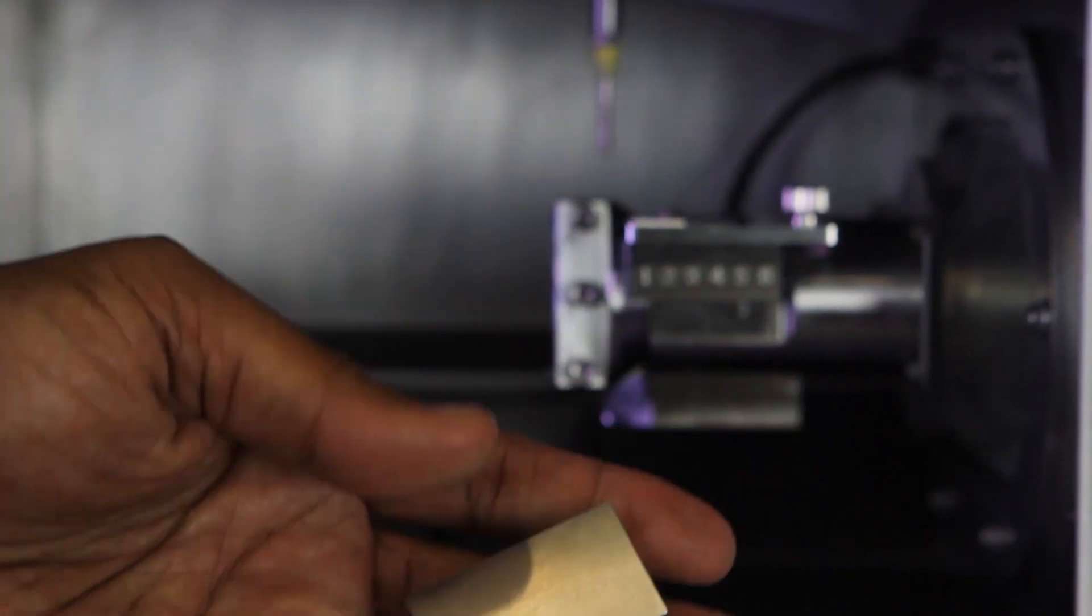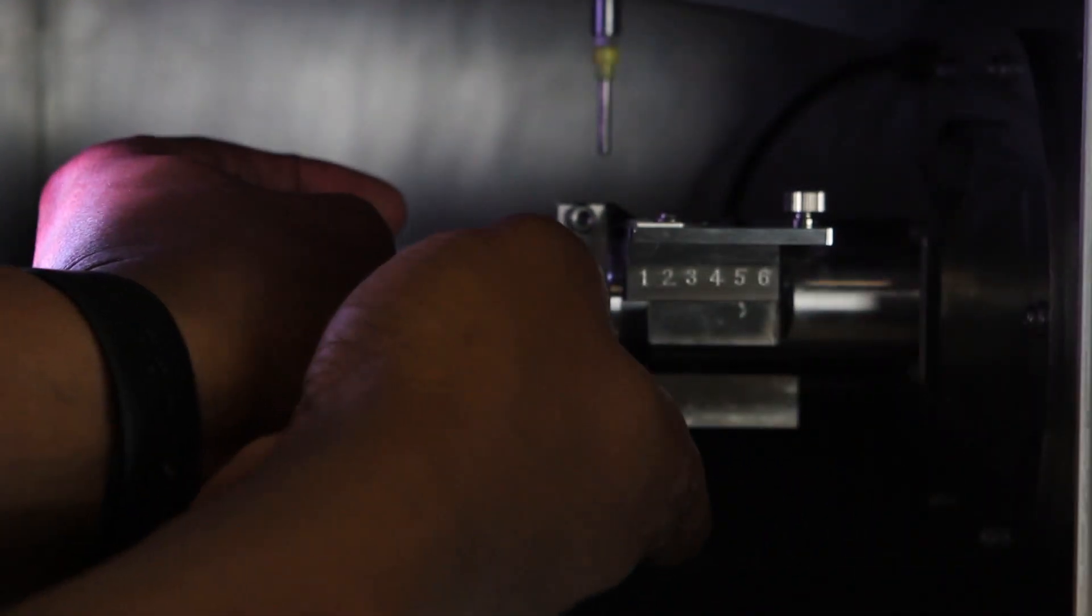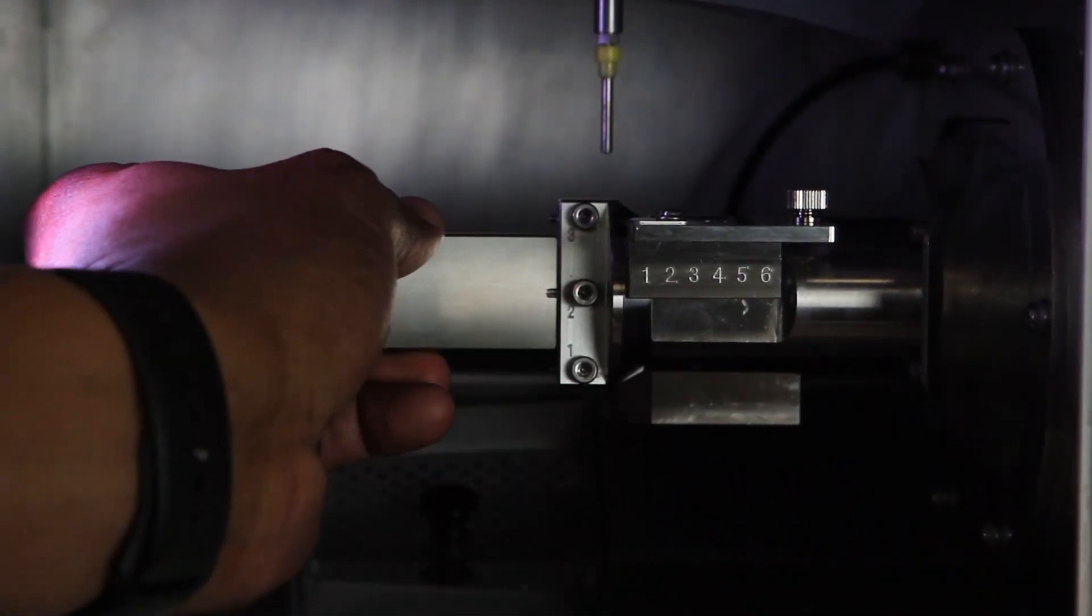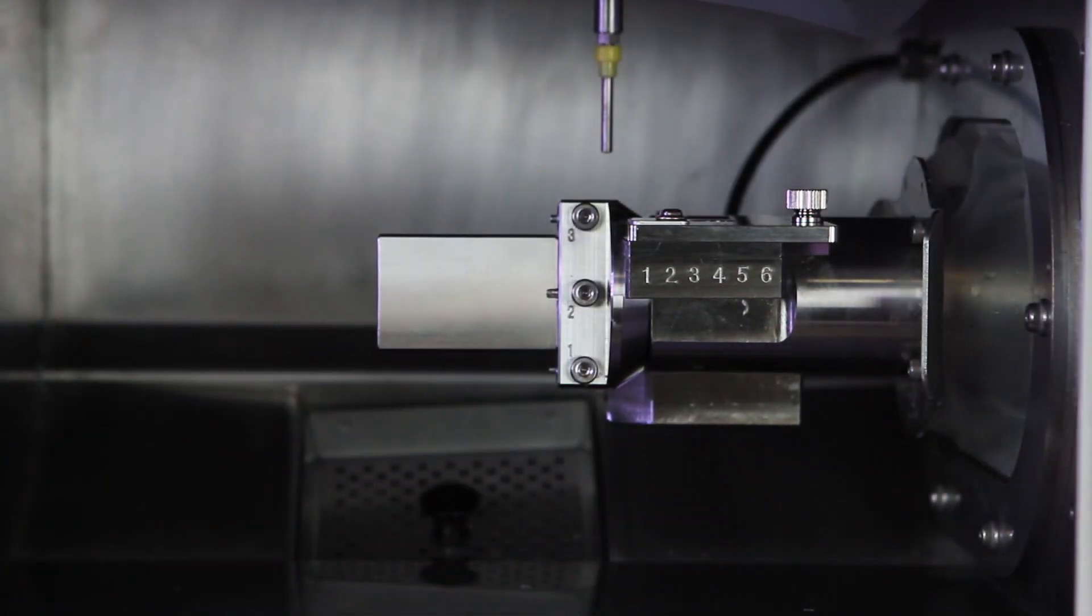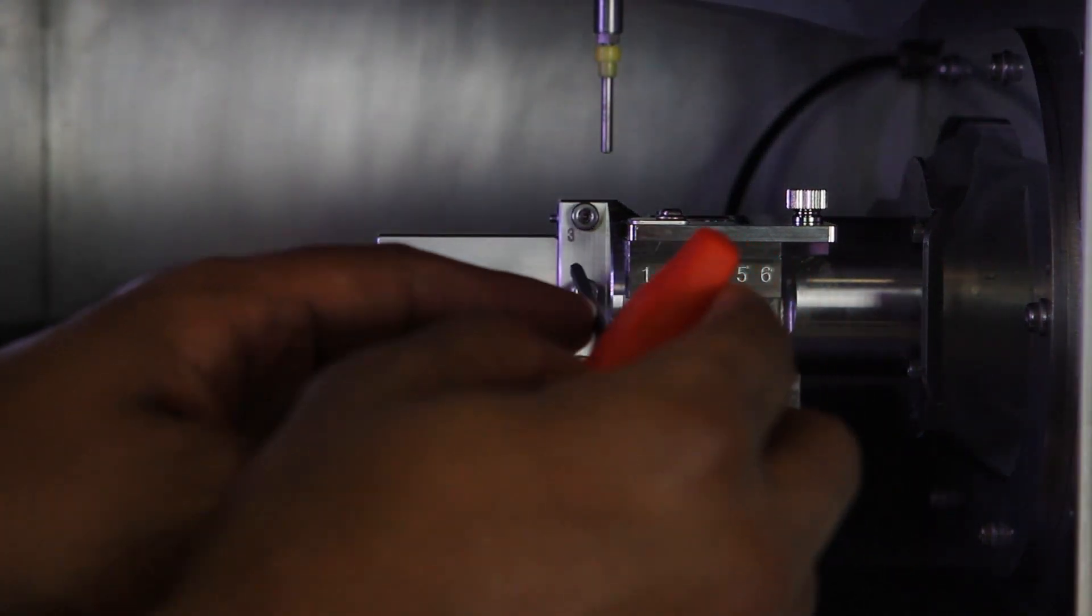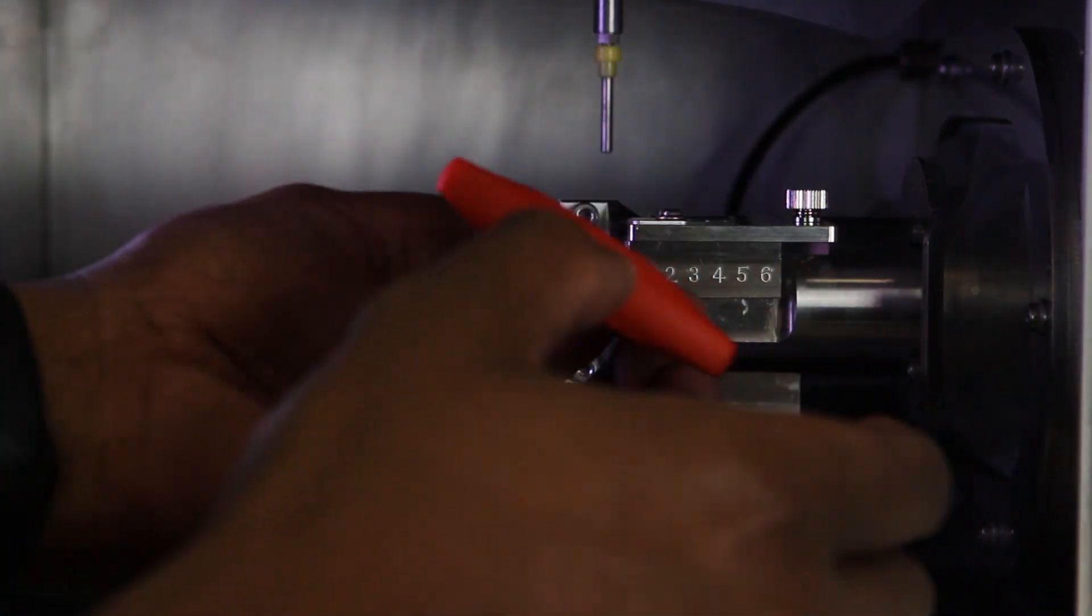Then insert the automatic correction jig. Check to be sure there is no gap between the edge of the correction jig and the mounting part. Tighten the mounting screw with the hexagonal screwdriver to secure the position of the automatic correction jig.